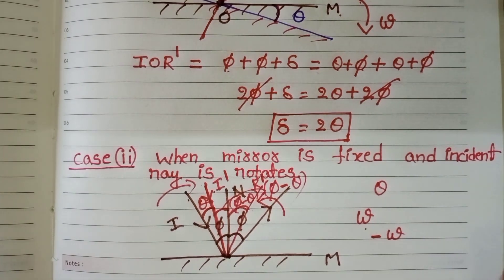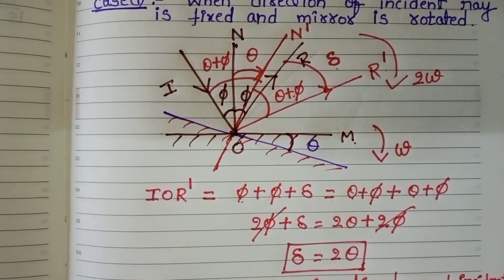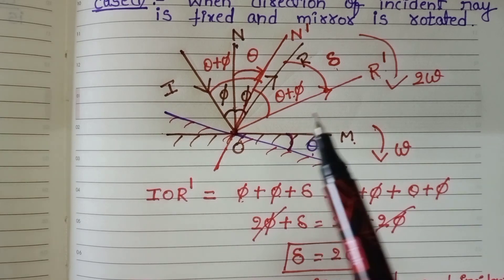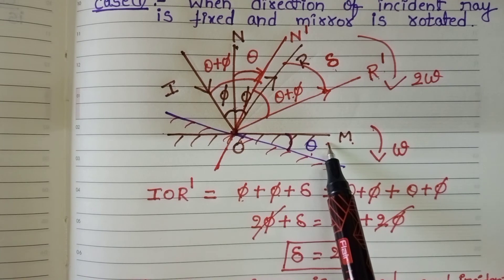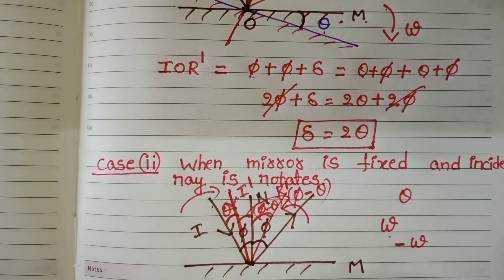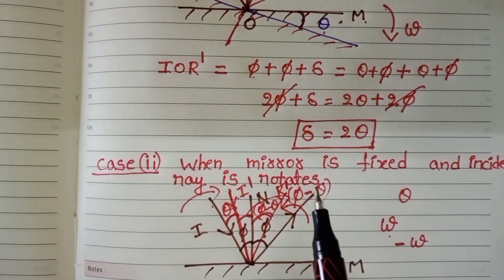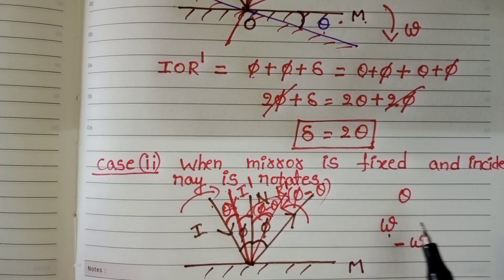So, remember these two cases. When the incident ray is fixed in its position but the mirror is rotated by an angle theta, then the rotation of the reflected ray is exactly twice the rotation of the mirror. In the second case, when the mirror is fixed and the incident ray is rotated by an angle theta, the rotation of the reflected ray is also theta, but the angular velocity of the reflected ray becomes minus omega. The negative sign represents the opposite direction of rotation of the reflected ray.